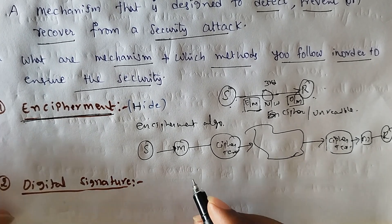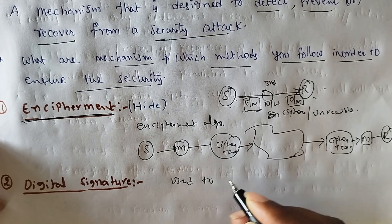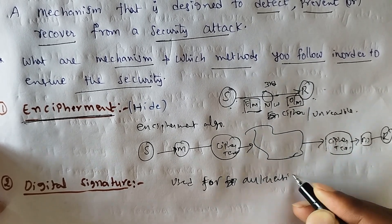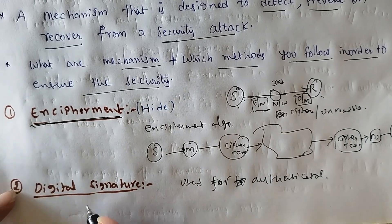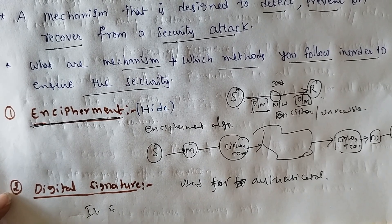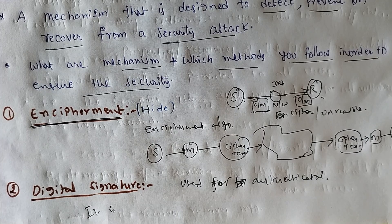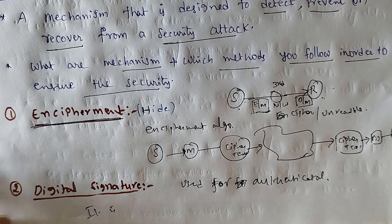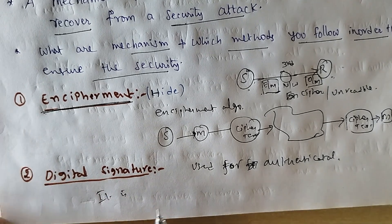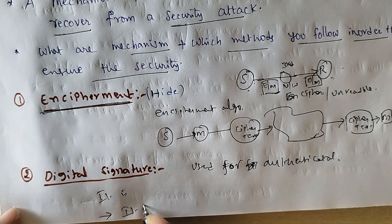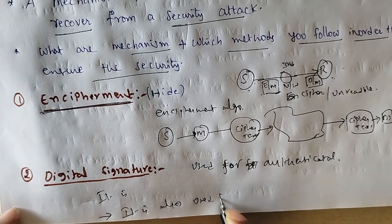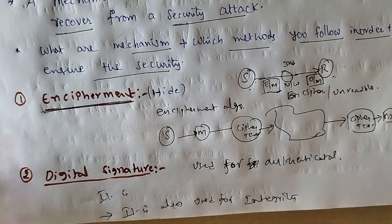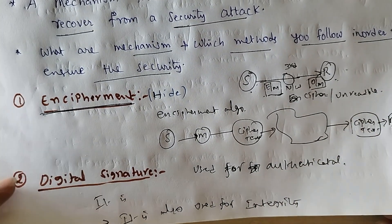Digital signatures are used for authentication. It is like a thumbnail or some special identifier for identifying a user. It is also used for maintaining the integrity of the data. So digital signatures serve both authentication and data integrity purposes.